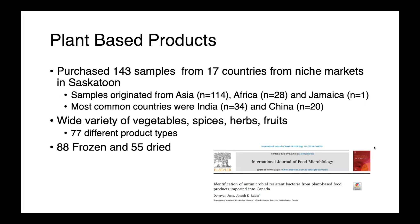The follow-up to this study was to look at some plant-based products, published just a couple of years ago. We purchased 143 samples from 17 countries from niche markets in Saskatoon. These samples originated in Asia, Africa, and one from Jamaica — most commonly from either India or China. These were a wide variety of different foods: vegetables, spices, herbs, and fruits — a total of 77 different products, many of which were frozen and some sold dried.